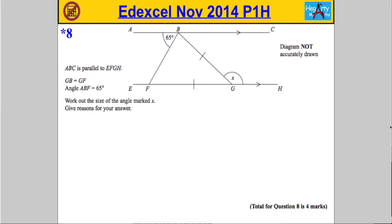Question 8 is another starred question, so more written communication is being tested here. We've got to explain our maths as we go. We're told that ABC is parallel to EFGH, GB is equal to GF, and the angle ABF equals 65, as shown. Work out the size of the angle marked X and give reasons for our answer.